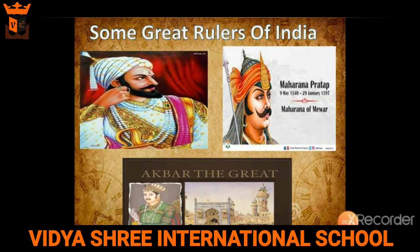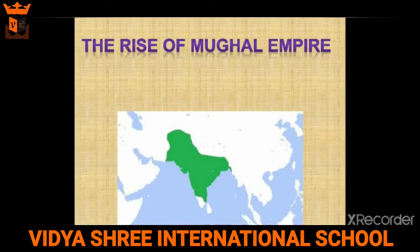In today's chapter, we are going to discuss some great rulers of India. The first is Akbar the Great, the second is Maharana Pratap, and the third is Shivaji. We will discuss all three rulers. First of all, we will start with the Mughal Empire — the rise of the Mughal Empire.